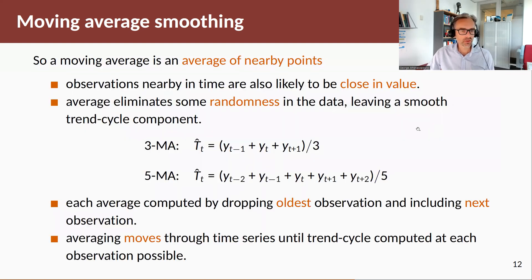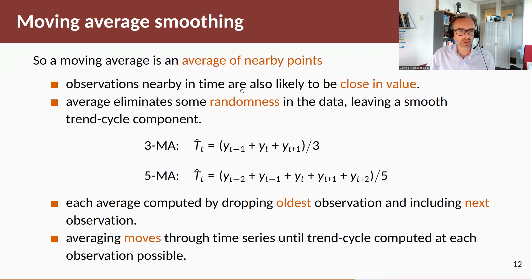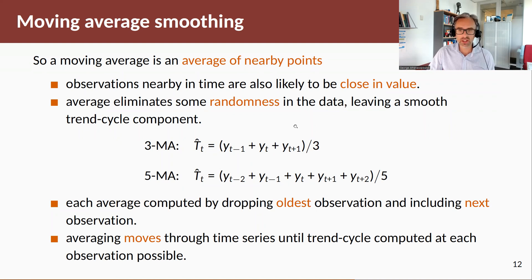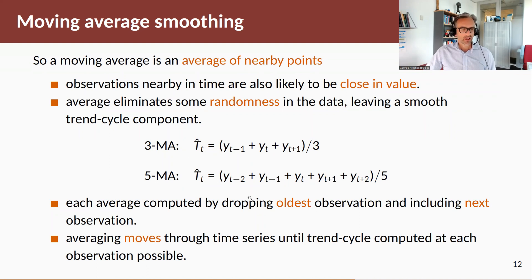Let's recap. A moving average is an average of nearby points. Observations nearby in time are also likely to be close in value. An average eliminates some randomness in the data, hence it leaves a smooth trend-cycle component. Here's the formula for a three-component MA and a five-order MA.